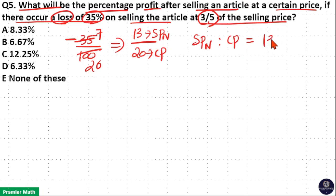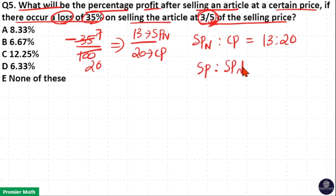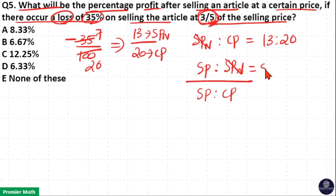Now 3/5 means if 5 parts is the original selling price, then 3 parts is the new selling price. So take the ratio of selling price to new selling price — we can cancel it and get the selling price to cost price ratio. Here original selling price is 5 parts and new selling price is 3 parts. 5 goes 4 times in 20, and 13 into 1 is 13.